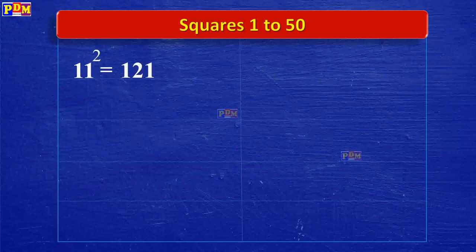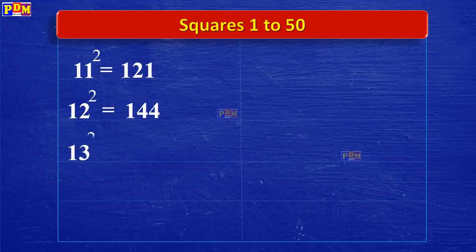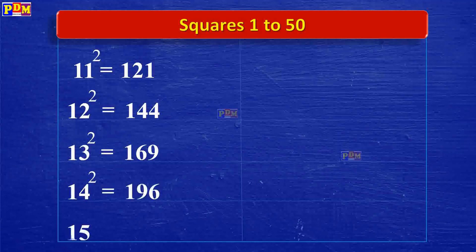12 squared is 144. 13 squared is 169. 14 squared is 196. 15 squared is 225. 16 squared is 256.